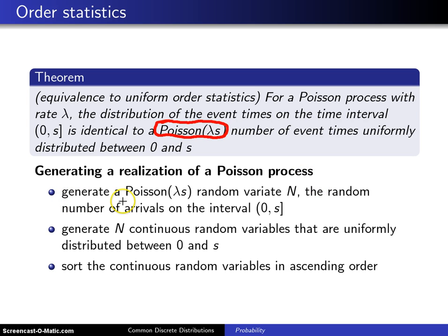First, you generate a Poisson(λs) random variate N, and that corresponds to the random number of arrivals on the interval (0,s). Then you use the theorem to generate N continuous random variables that are uniformly distributed between 0 and s.